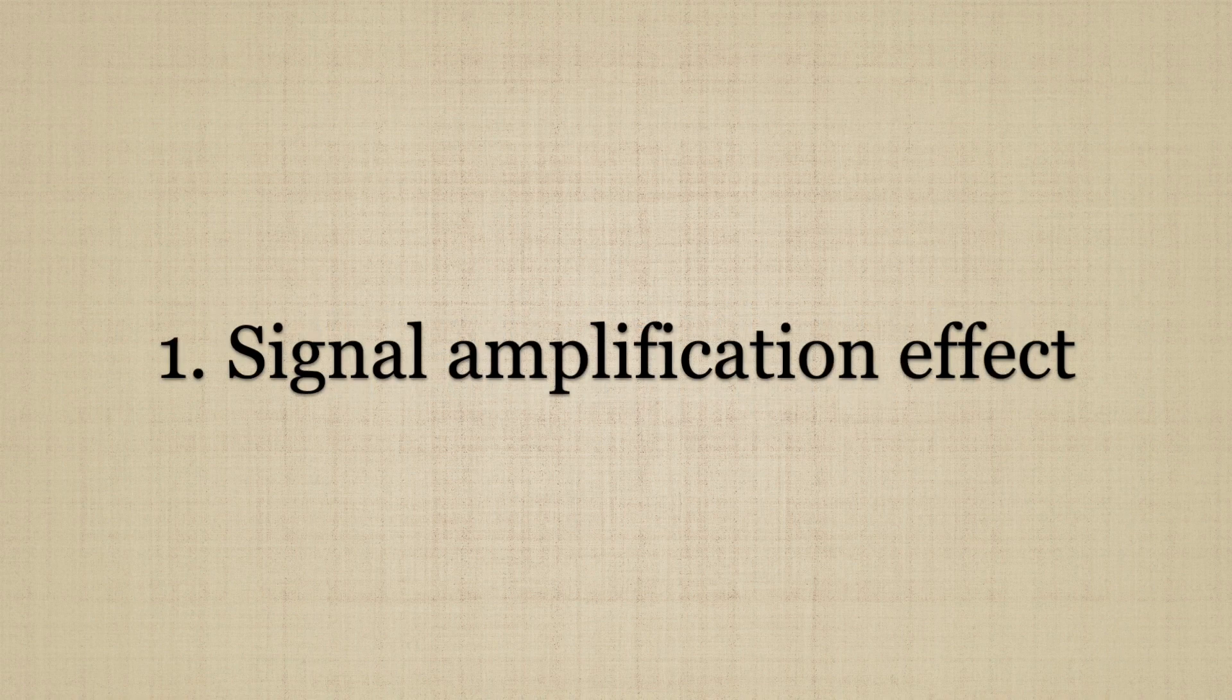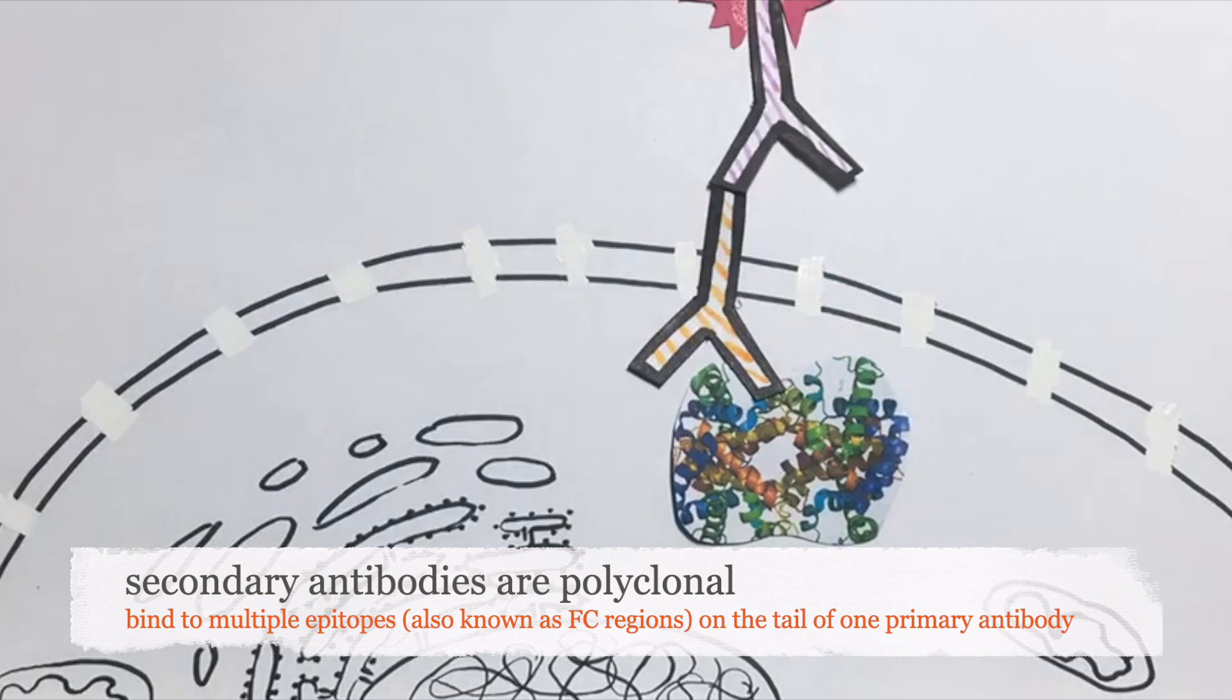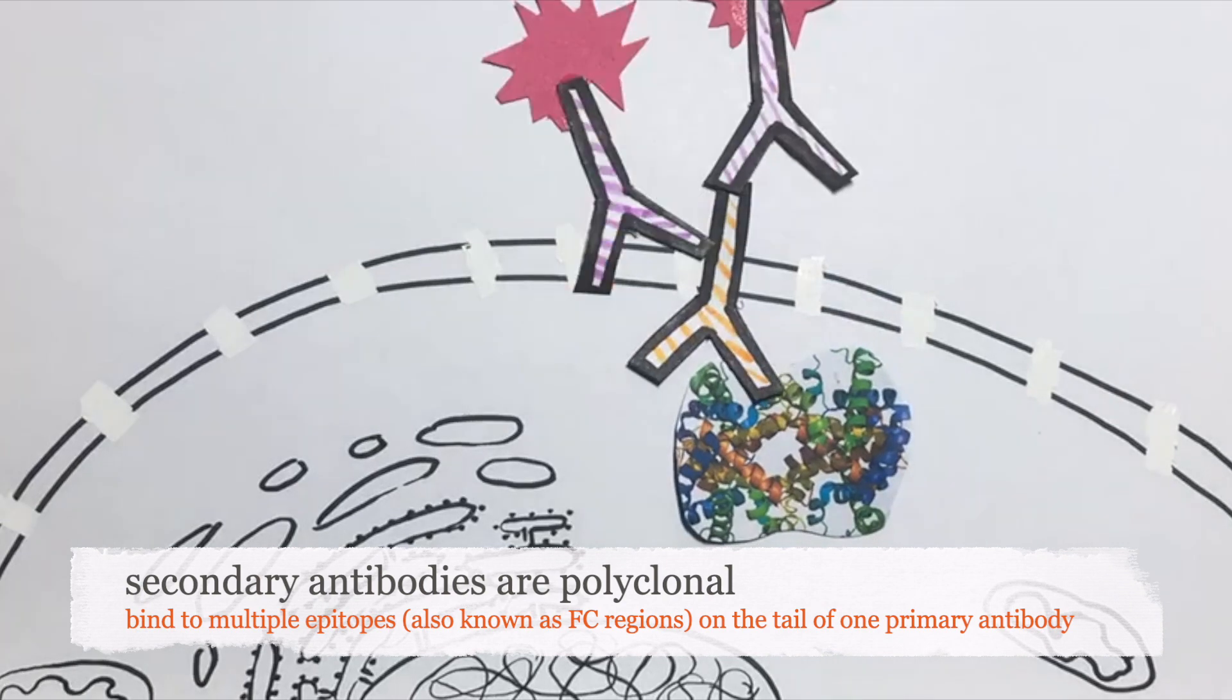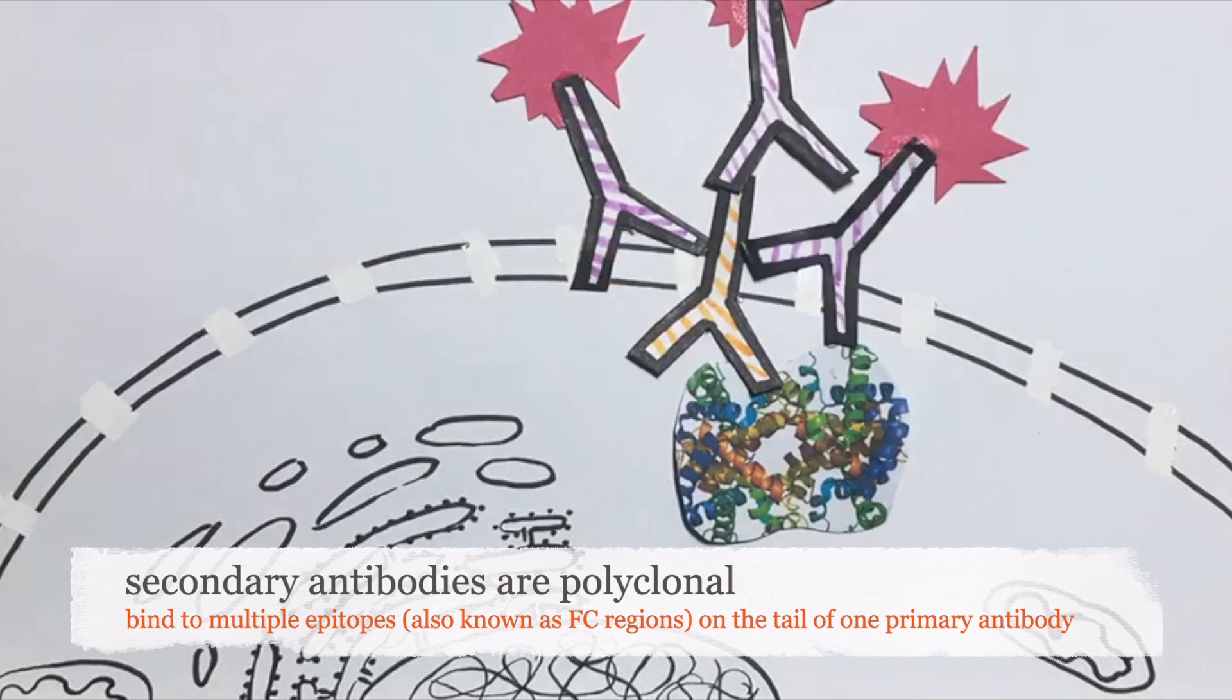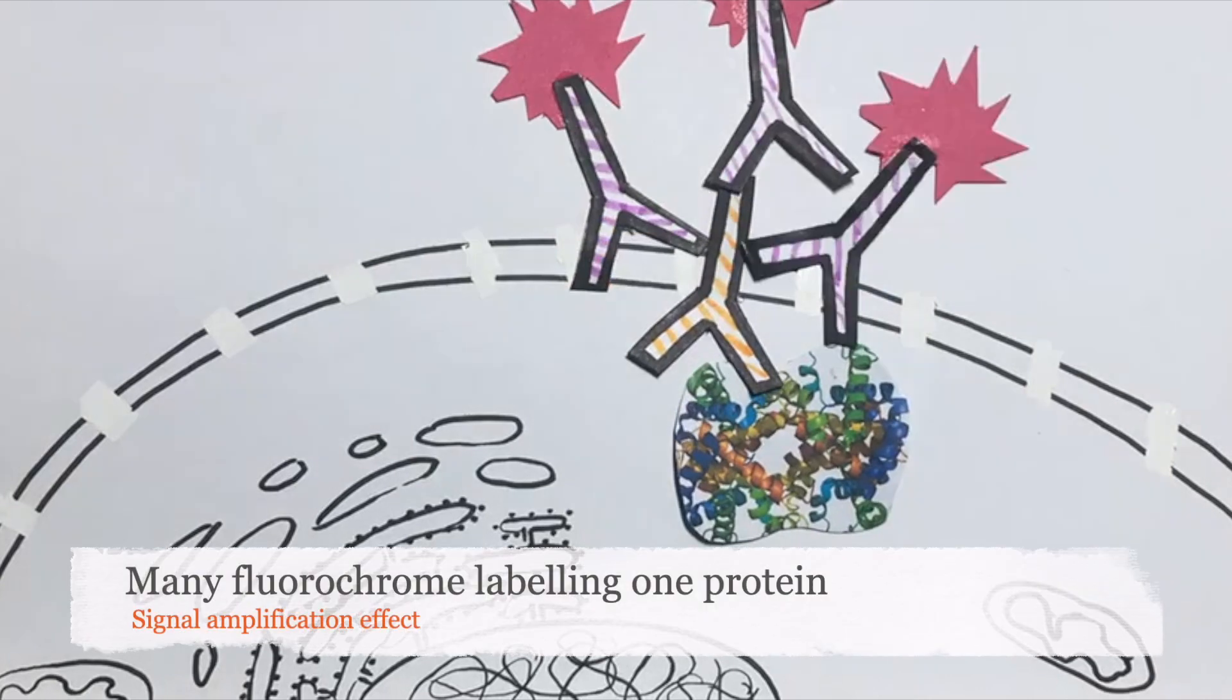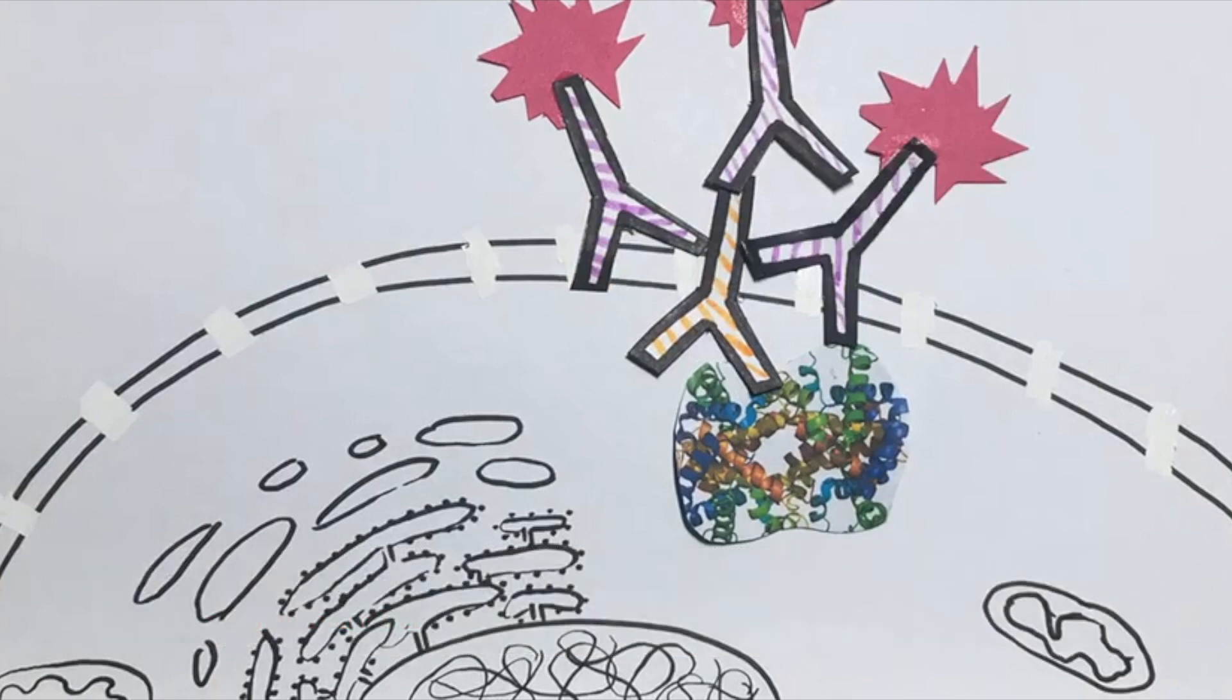Firstly, the indirect method has a signal amplification effect. Secondary antibodies are polyclonal and often bind to multiple epitopes, also known as the FC region on the tail of one primary antibody, resulting in many fluorochrome labeling one protein and hence the signal amplification effect.